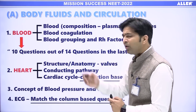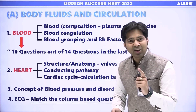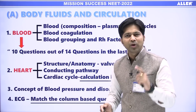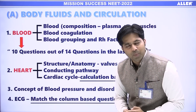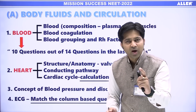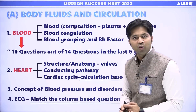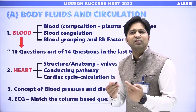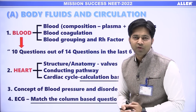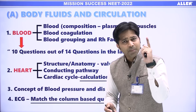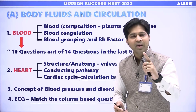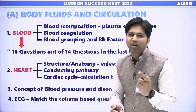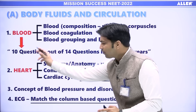The first chapter is Body Fluids and Circulation. The most important topic in this chapter is Blood. Keep this firmly in mind — all subtopics under blood, whether it is blood composition, blood clotting or coagulation, blood grouping, Rh factor, or the concept of Erythroblastosis Fetalis — promise yourself that you will not go into the main exam without revising blood. Out of the 14 questions asked in the last 6 years, 10 were from the blood topic.